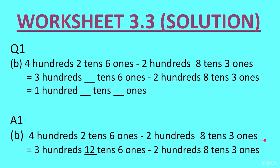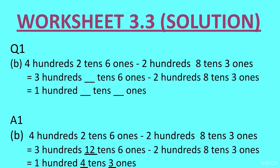Now part B: 6 ones minus 3 ones — that can be subtracted, no problem. From 2 tens there was a problem subtracting 8 tens, so we borrowed from the hundreds. The 4 hundreds becomes 3 hundreds. 1 hundred goes to the tens place, adding to the 2 tens already there, becoming 12 tens. Then 12 tens minus 8 tens is 4, and 3 hundreds minus 2 hundreds is 1.